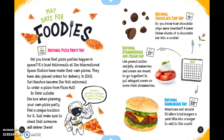May Days for Foodies. The third Friday in May is National Pizza Party Day. Did you know that pizza parties happen in space? Astronauts at the International Space Station have made their own pizzas and placed orders for delivery. In 2001, Yuri Usachev became the first astronaut to order a pizza from Pizza Hut. Think outside the box when planning your own pizza party — find a unique location, but make sure to check that someone will deliver there. This picture says, 'Uh, Houston, we have a problem — my pizza is floating away from me.'